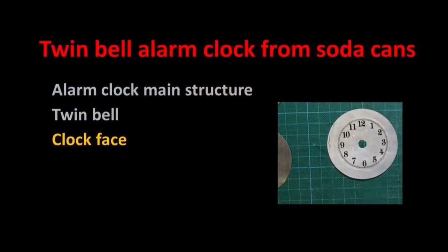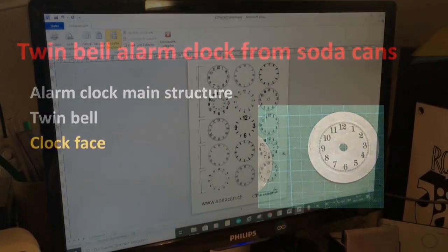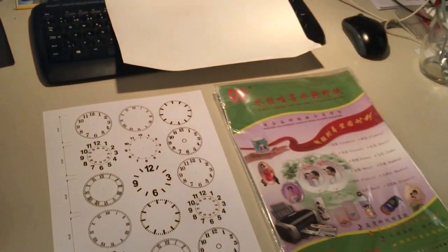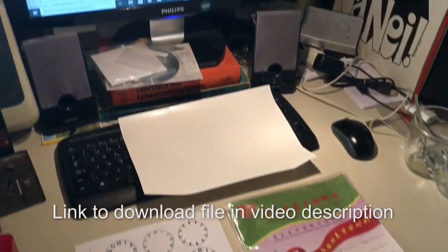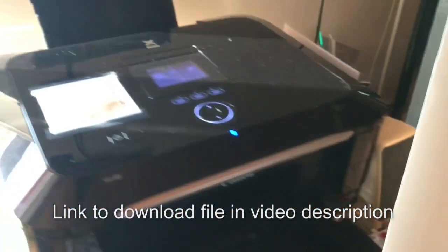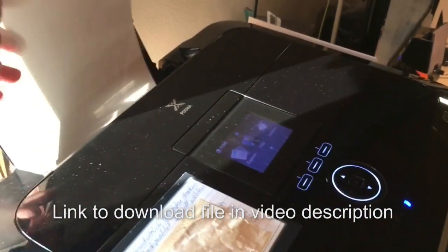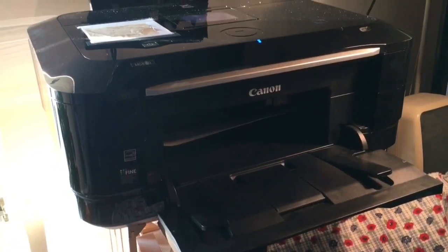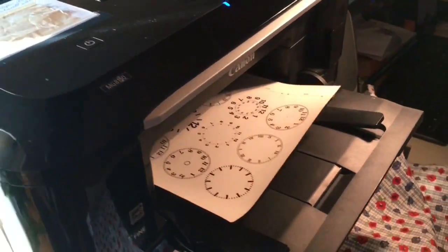How to make the clock face is the next step. From the internet I downloaded various clock face designs. In the description of the video you will find a link to download the file. The clock faces then are printed to inkjet transfer paper. The transfer paper I used is also given in the description of the video.